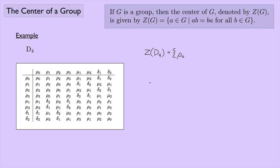Let's try row one. How about row one and mu one? Row one times mu one gives delta one. And mu one times row one gives delta two. They don't match — so row one is not in the center.